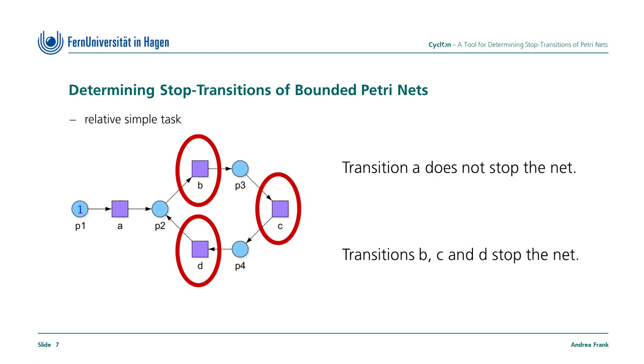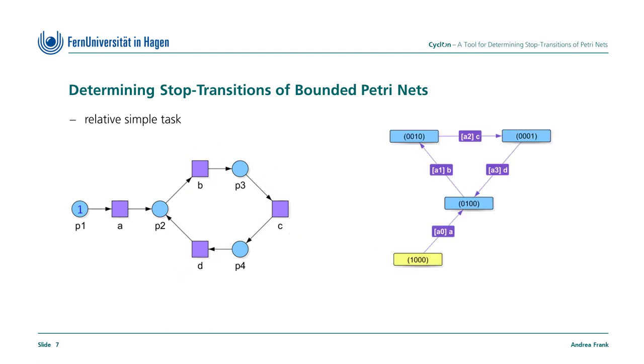Algorithmically, we can examine the reachability graph for determining stop transitions in bounded nets. To determine stop transitions, the reachability graph only needs to be checked for cycles. T stops the net if and only if every cycle in the reachability graph contains T.